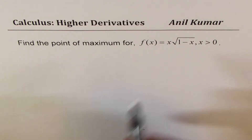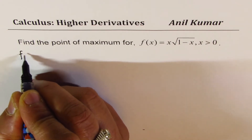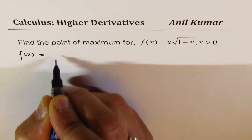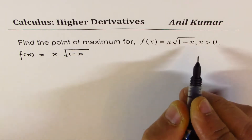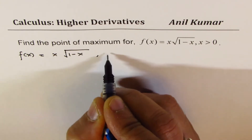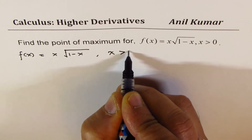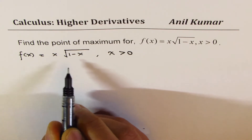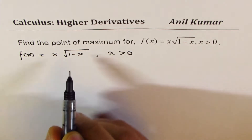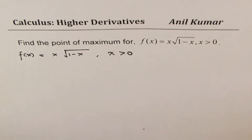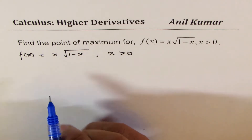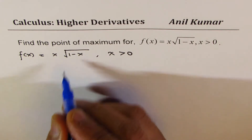Let's look into the function first. It is f(x) = x times √(1−x), and we are given a restricted domain where x > 0. You also notice that √(1−x) is itself a restricted function. Do you know what the domain of √(1−x) is? Let's look into that.